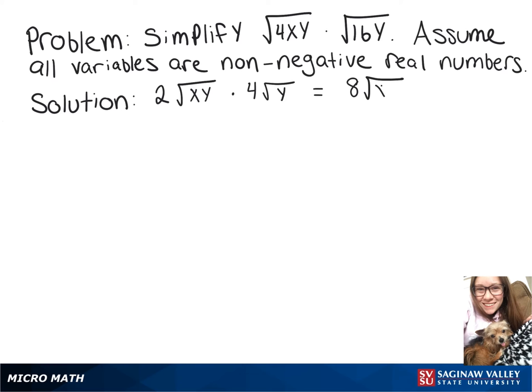This gives us 8 times the square root of xy squared. Now we can take the square root of y squared, giving us 8 times the absolute value of y times the square root of x. And then since the directions say that our variables are non-negative, we can write that as 8 times y times the square root of x.